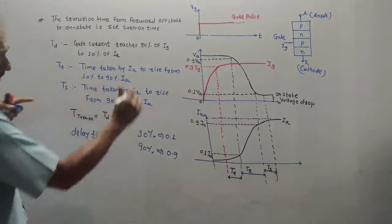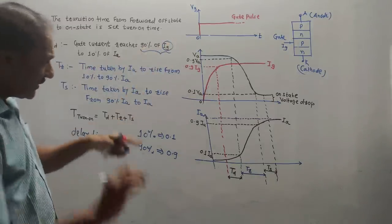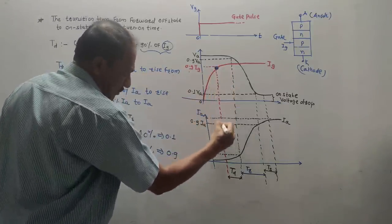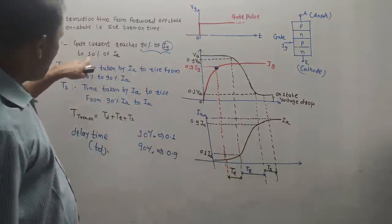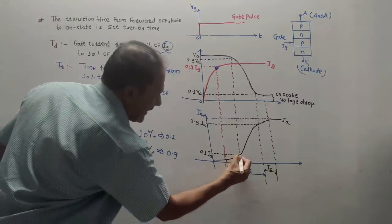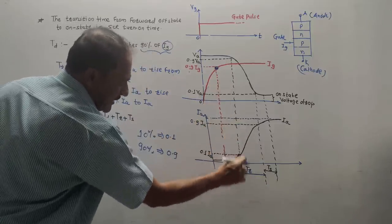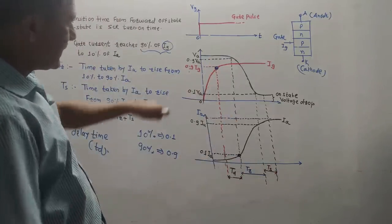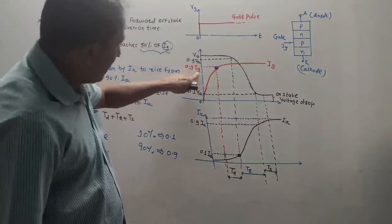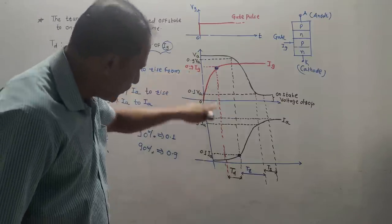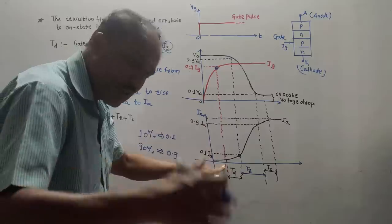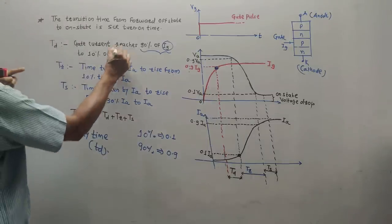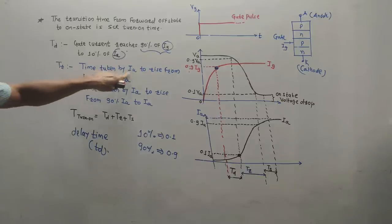Delay time td is the time period from when the gate current reaches 90% of IG to when the anode current reaches 10% of IA. In the diagram: 0.9 IG is this point on the gate current graph, and 0.1 IA is the corresponding point on the anode current graph. The time difference between these two points is the delay time. In other words, it is the time from gate current reaching 90% of its final value to anode current reaching 10% of its final value.